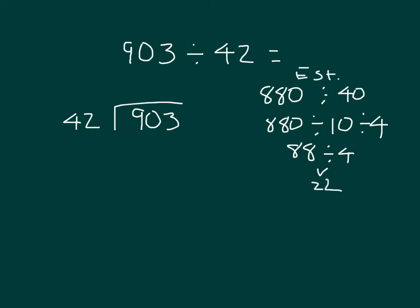Now for our exact answer, 42 cannot go into that 9 hundreds, so we look at the 90 tens and think how many times that 42 can go into the 90 tens, which is 2. And we can use our estimate over here to help us with that. 2 times 42 is 84, and 90 minus 84 is 6 tens there. We regroup that into the ones place to get 63 there.